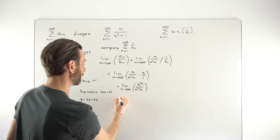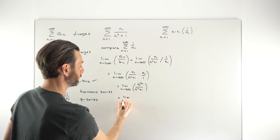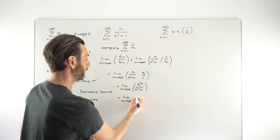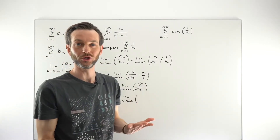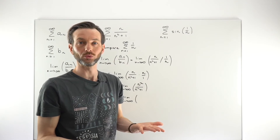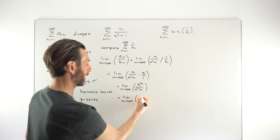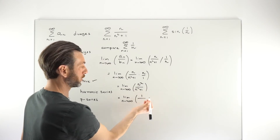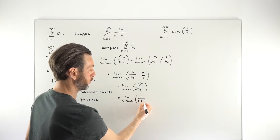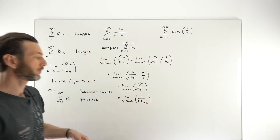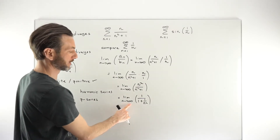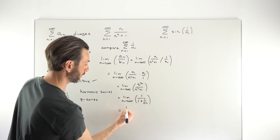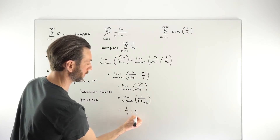To evaluate the limit of n²/(n²+1), we divide the top and bottom by n². The numerator becomes 1, and the denominator becomes 1 + 1/n². As n tends to infinity, 1/n² tends to 0, leaving us with 1 over 1, which equals 1.